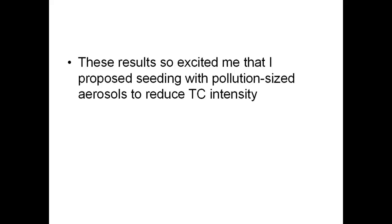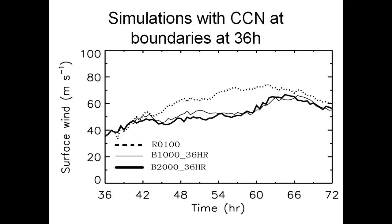I got so excited that I immediately wrote this up in the journal for weather modification. She also did simulations where the CCN were introduced at 36 hours, by which time the storm had evolved to a more mature state. The wind had reduced appreciably — not as much as introducing it initially, but still an appreciable reduction in wind intensity.